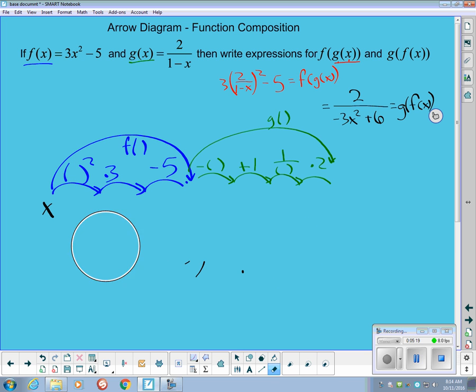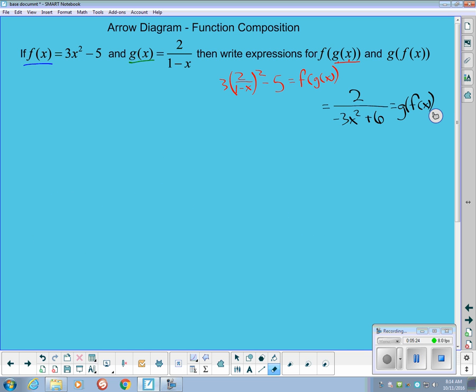Now the question that usually comes up at this point would have something to do with a common mistake that kids make if they have a function that looks like 3x squared plus 5x minus 7. And now all of a sudden we've got x's in multiple locations, which is not a naturally nice thing to do with the arrow diagrams.